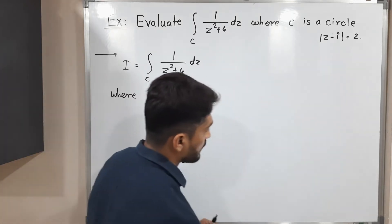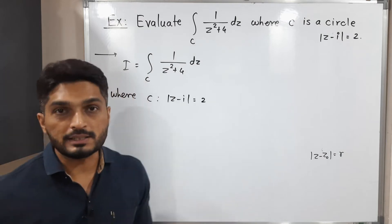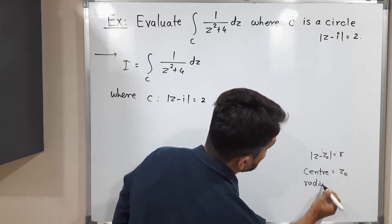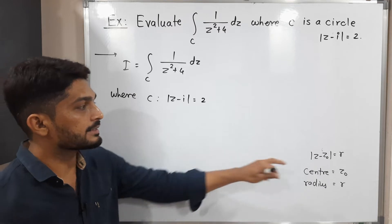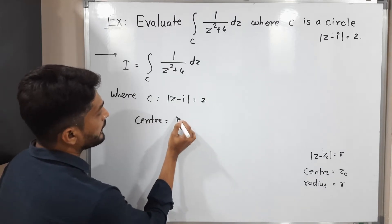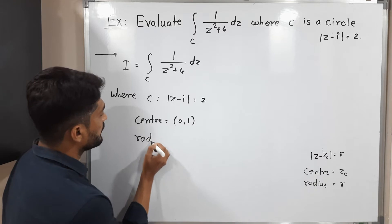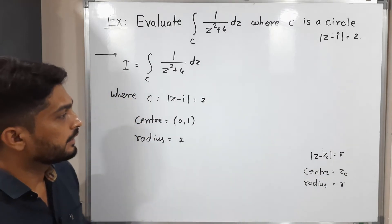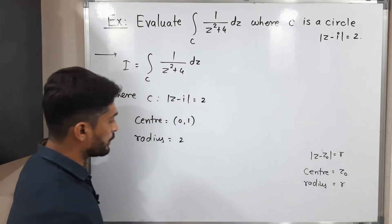You know the standard form of a circle: when you have |z - z₀| = r, it represents a circle with center z₀ and radius r. So if you compare that equation with this one, you can easily see its center is i, since at the place of z₀ we have i. So its center is i, that means (0, 1) — real part 0 and imaginary part 1. The radius is equal to 2, as we can see on the right-hand side of that equal sign.